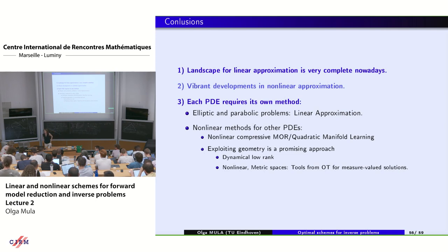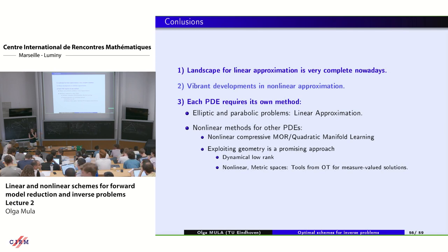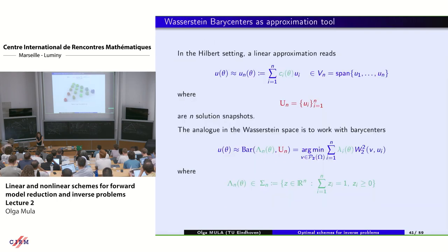There are two pending questions from online participants. The first: are the last graphs comparing linear and quadratic manifolds with the same little n or the same computational cost, and what would happen with a fixed online cost? I believe they only compared with the same little n and then little n plus little n squared — please check the paper as I don't remember precisely.